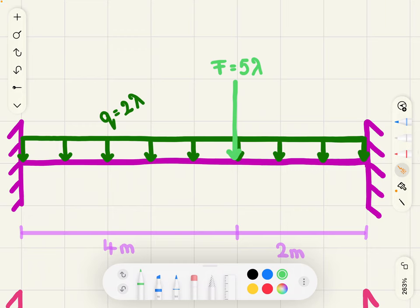Say we want to find the collapse loading factor, lambda, for this continuous beam of maximum moment capacity, mu, due to the external loads.